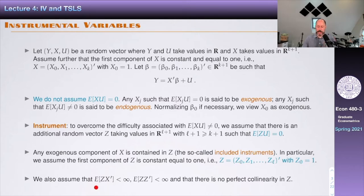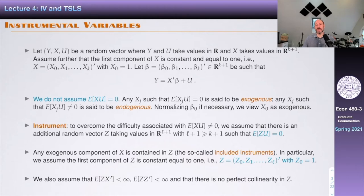We're going to assume that the expected value of z·x' is finite, the expected value of z·z' is finite, and that there's no perfect linearity in z. One thing you'll notice very quickly is that now that we bring these instruments, we're going to be placing on z all those same conditions we previously placed on the x's — exogeneity, finite second moments, no perfect linearity — and now we also have the same type of assumptions for the instruments.